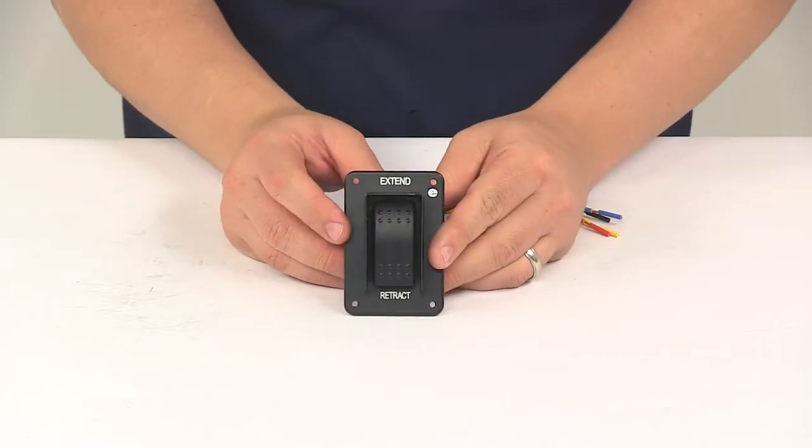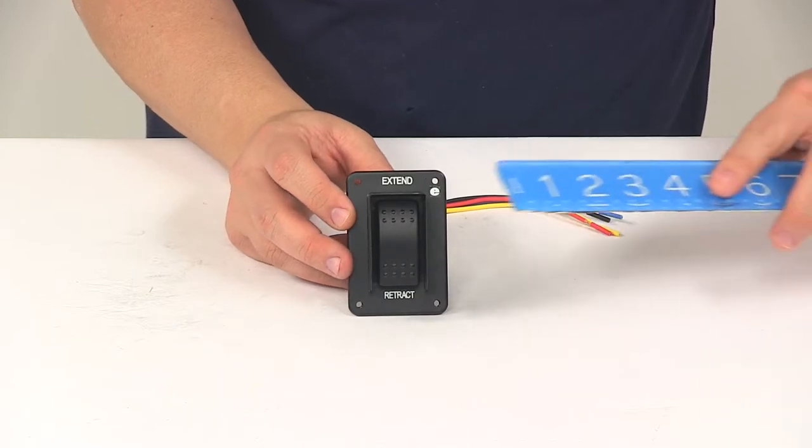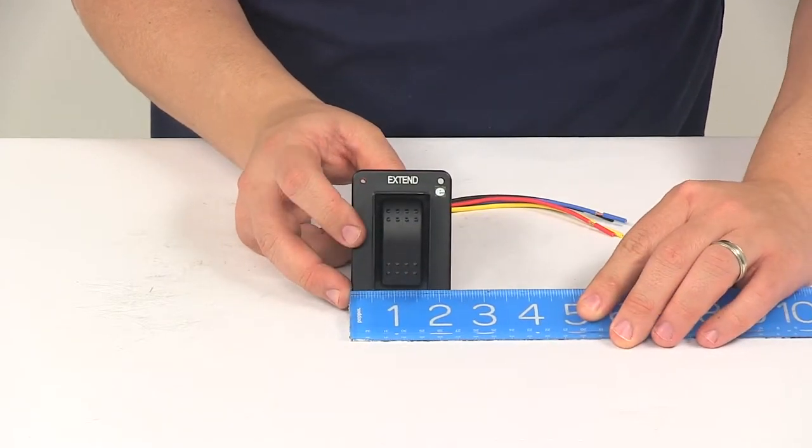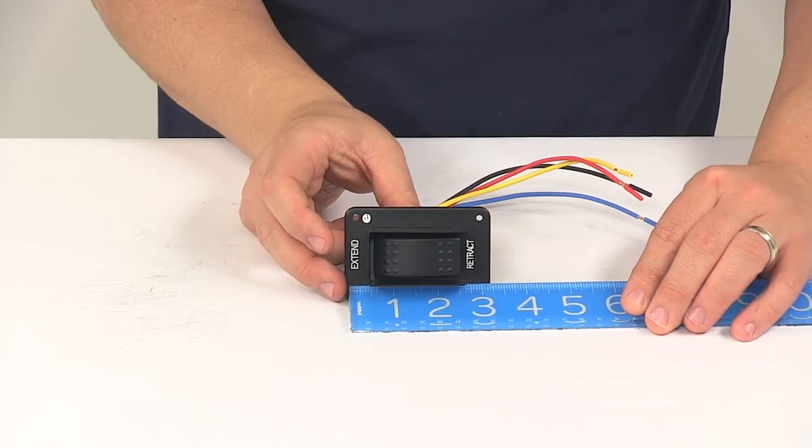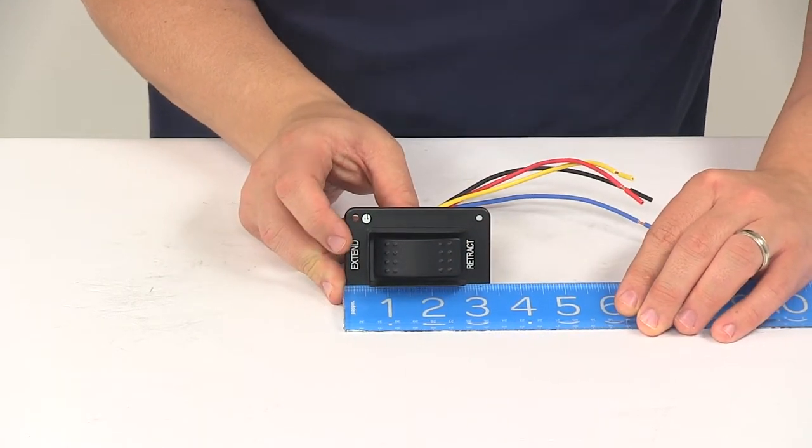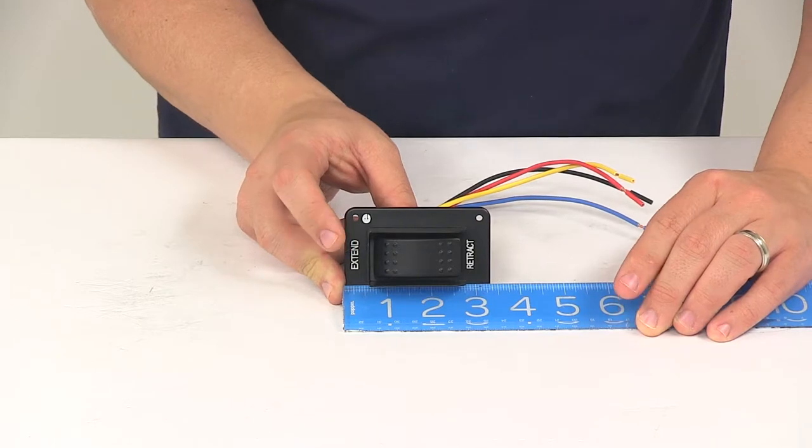A few measurements to go over with you. Measuring this direction, edge to edge, it's going to measure two and one quarter. Going this direction edge to edge, it's going to measure about three and one quarter to three and five sixteenths of an inch.